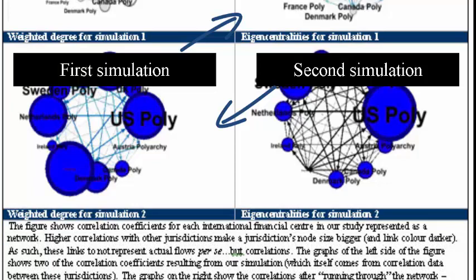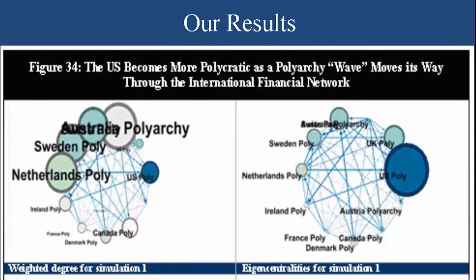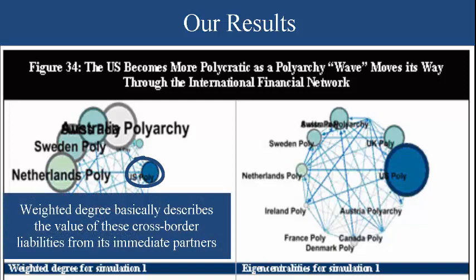we get a far more accurate view of how polyarchy spread in these jurisdictions than if we simply looked at our data one time. So if we see in the first simulation that the U.S. had relatively low weighted degree — in other words, the U.S.'s centrality had been relatively low just looking at the data — we see that the U.S.'s centrality,